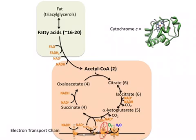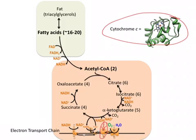Complex three donates those electrons to a small protein called cytochrome C. Cytochrome C donates the electrons onto complex four, also called cytochrome C oxidase — you should know this enzyme. It uses most of the oxygen we breathe, and that oxygen is the final electron acceptor. That oxygen gets reduced to water in the process — this is how we produce water as part of our metabolism — and complex four also pumps protons.